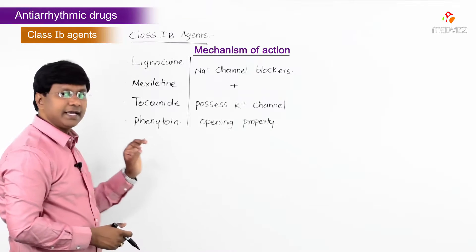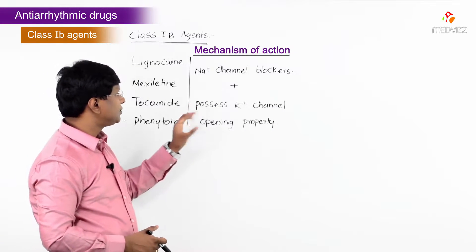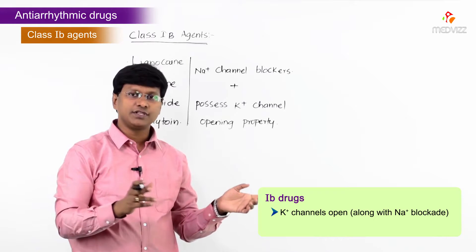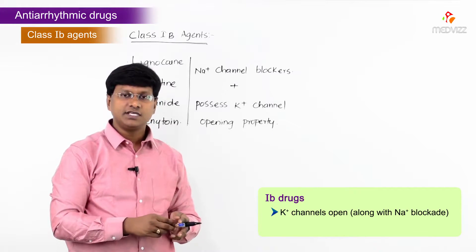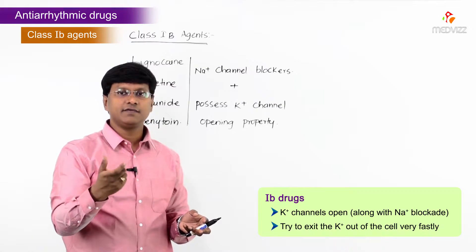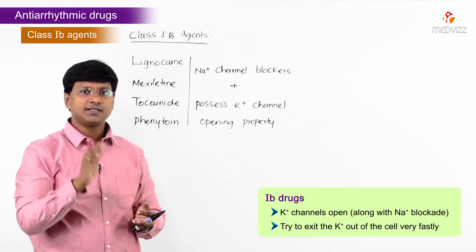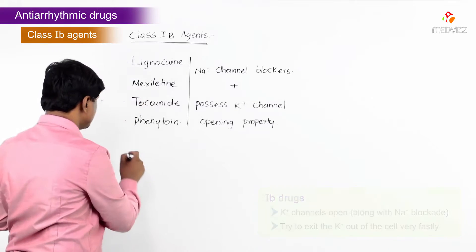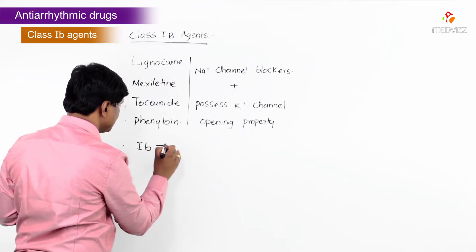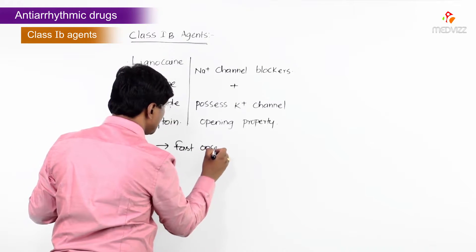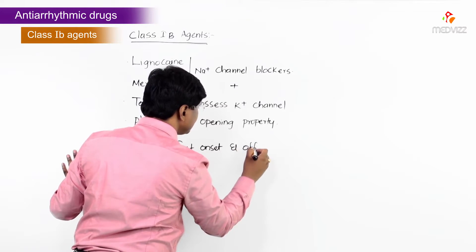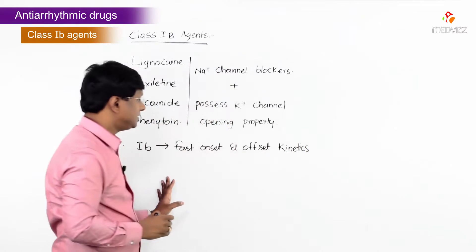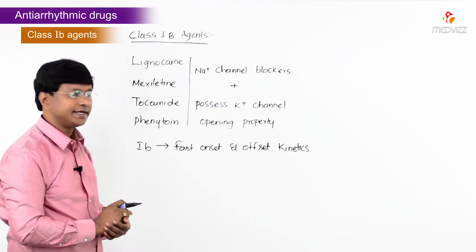An important point to understand: these drugs open the potassium channels. Once the potassium channels are opened along with the sodium blockade, potassium exits the cell very rapidly. That is why Class 1b agents have fast onset and fast offset kinetics.